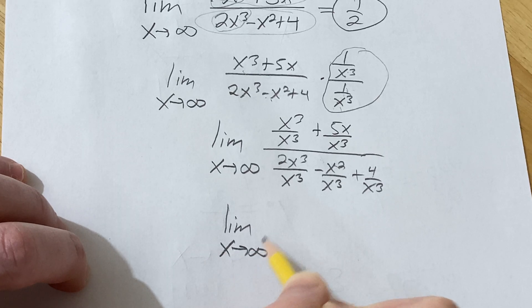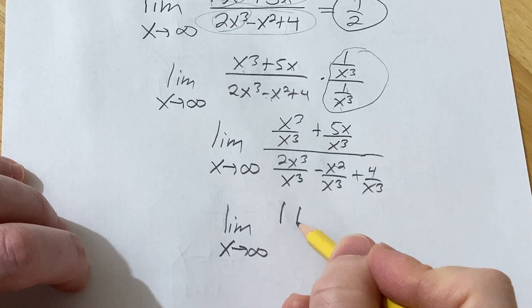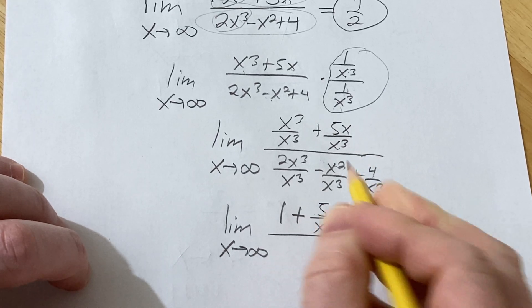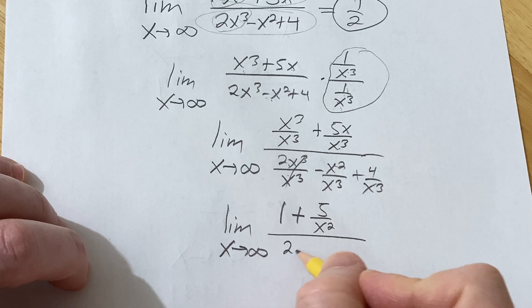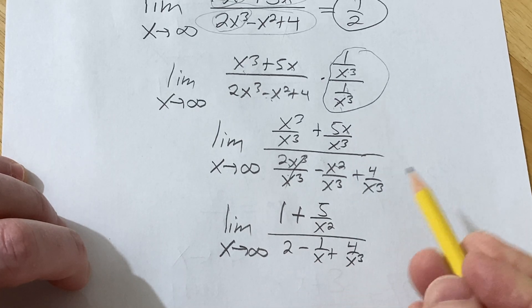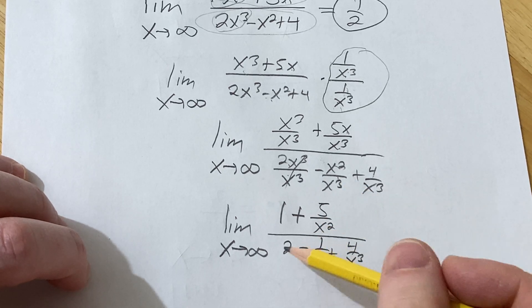As x approaches infinity, this is going to be 1 plus 5x over x cubed is just 5 over x squared. Over this is going to be 2 minus 1 over x plus 4 over x cubed. I think I did that right, because we lost an x there.